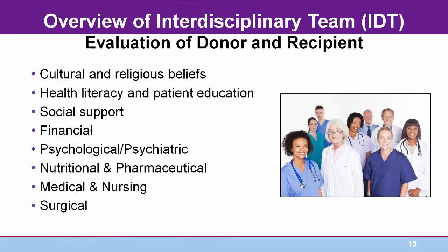Kidney transplantation is a complex process, and that complexity is increased because a successful transplant involves not just one patient but two — the donor and the recipient. It takes an interdisciplinary team of experts working with both patients to make the transplant happen, and the process begins with intensive evaluation. This slide depicts broad categories of patient dimensions that must be evaluated for both living donors and recipients prior to transplantation; all dimensions must be considered in order to assemble a holistic assessment.